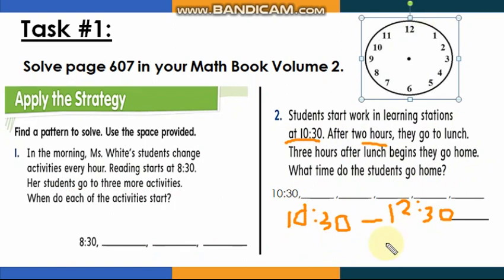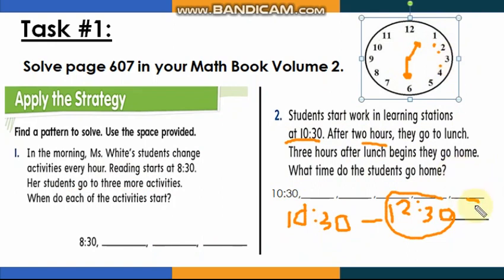If it's 12:30 and we add three more hours — one, two, three — it will be 3:30. The students go home at 3:30. Use the analog clock because it's very useful and helpful for solving these questions. You can move the hour hand and read the time to find your answer.